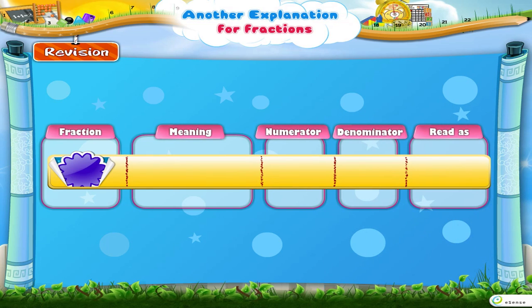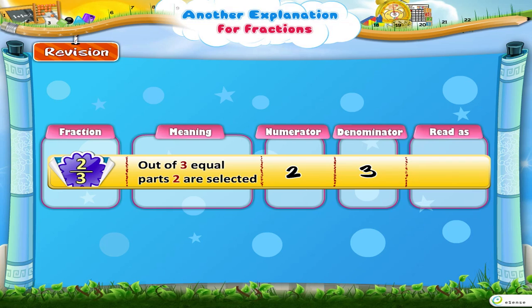Look at this fraction. Here, out of 3 equal parts, 2 are selected. So 2 is the numerator and 3 is the denominator. We read this fraction as 2 upon 3.